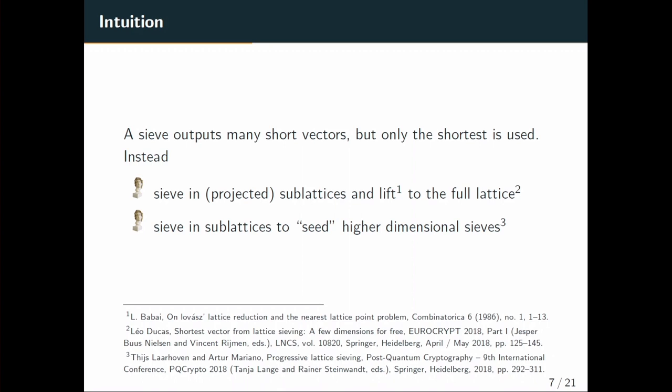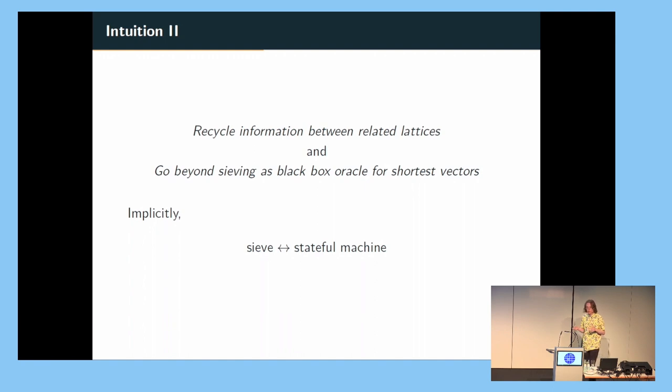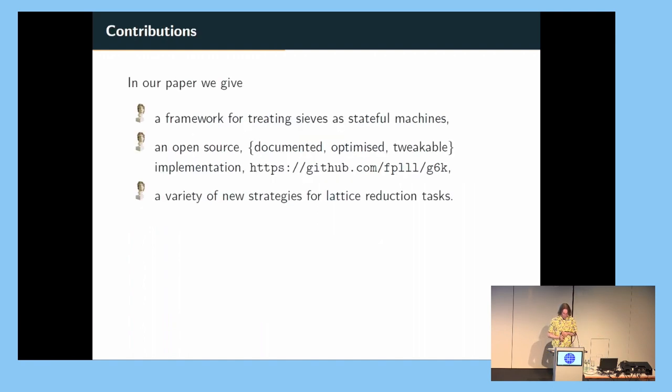Two previous works, which I won't speak about quite so much right now, but both of them somehow sieve in a smaller dimensional lattice and use this work to either solve the shortest vector problem exactly, or somehow seed future sieving operations and therefore make them quicker. And this is the intuition that we want to take from this. We want some general framework of recycling information, where information is short vectors, and we want to recycle it between related lattices. And we really need to go beyond this idea that a sieve is a box, and we press a button, and then we take a short vector. It's really a box on wheels, which carries a sack of short vectors on its back. And implicitly what we're doing is therefore trying to treat one of these sieves as a sort of stateful machine, which we describe a series of instructions on. And that's one of the contributions of the work.